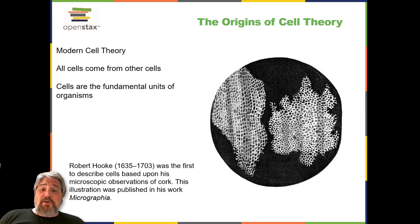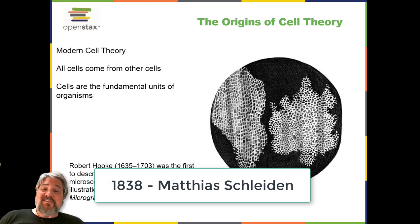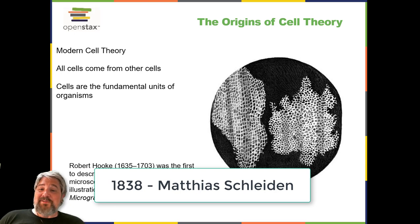Despite Hooke's early description of cells, their significance as the fundamental unit of life was not yet recognized. Nearly 200 years later, in 1838, Matthias Schleiden (1804–1881), a German botanist who made extensive microscopic observations of plant tissues, described them as being composed of cells. Visualizing plant cells was relatively easy because plant cells are clearly separated by their thick cell walls.